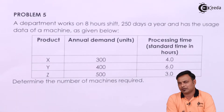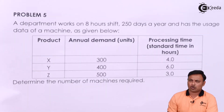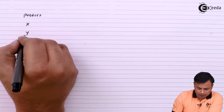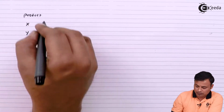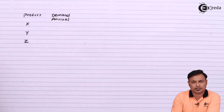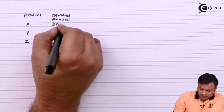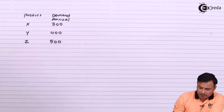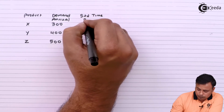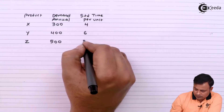Let us first try to understand how much time shall be required and how much time is available if we buy one machine. First, we will calculate the total processing time for these 3 products. We have product X, Y, and Z with their annual demand. Please be very careful — if they give you the monthly demand, you need to multiply by 12 to get the annual demand. We have annual demand of 300, 400, and 500 units, and the standard time per unit in hours: 4, 6, and 3 respectively.